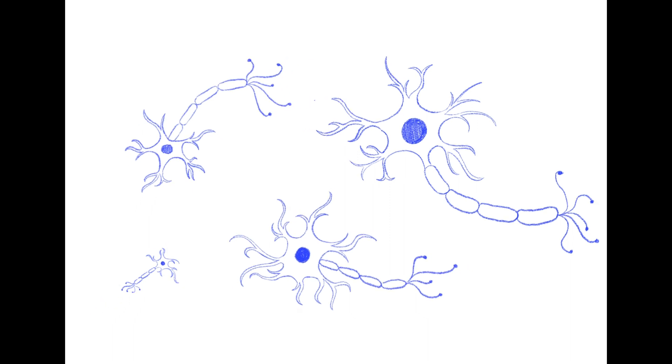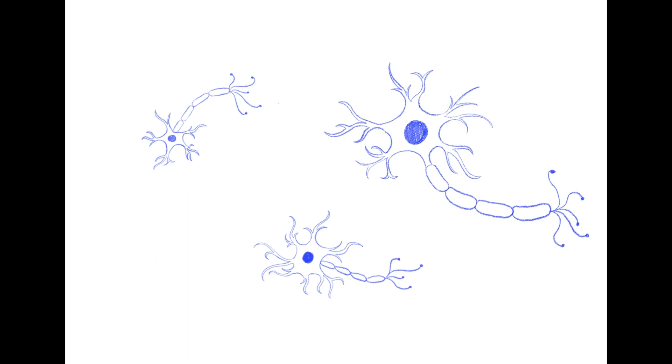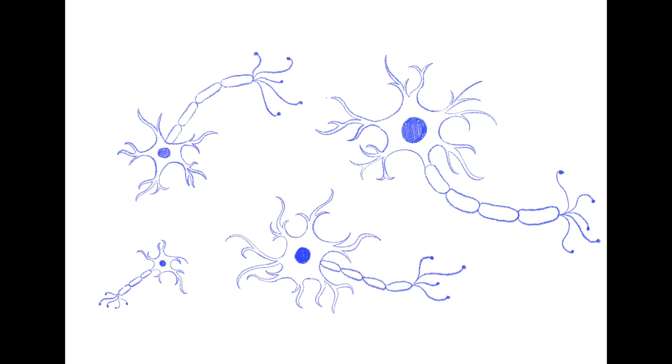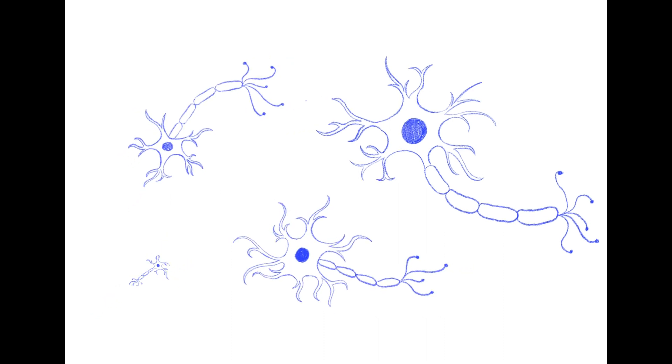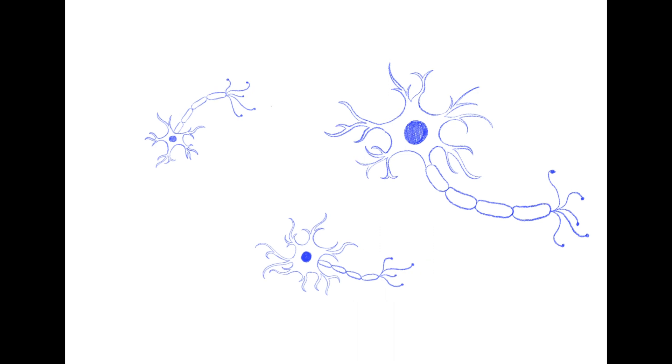However, this decrease in neuronal size and number is not uniform across the brain. Smaller synapses shrink considerably more, and ones that are large enough can be entirely unaffected or even strengthened. This could be indicative of important memories being stored in these larger neurons, while less important memories are encoded in the smaller neurons.